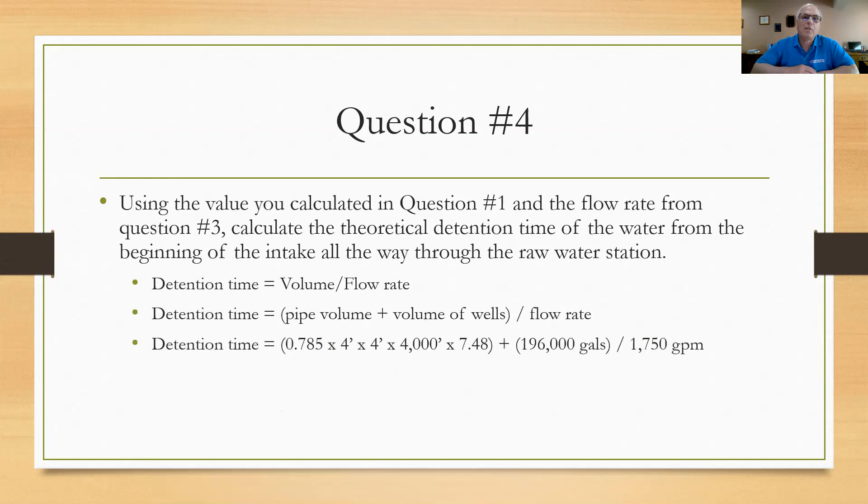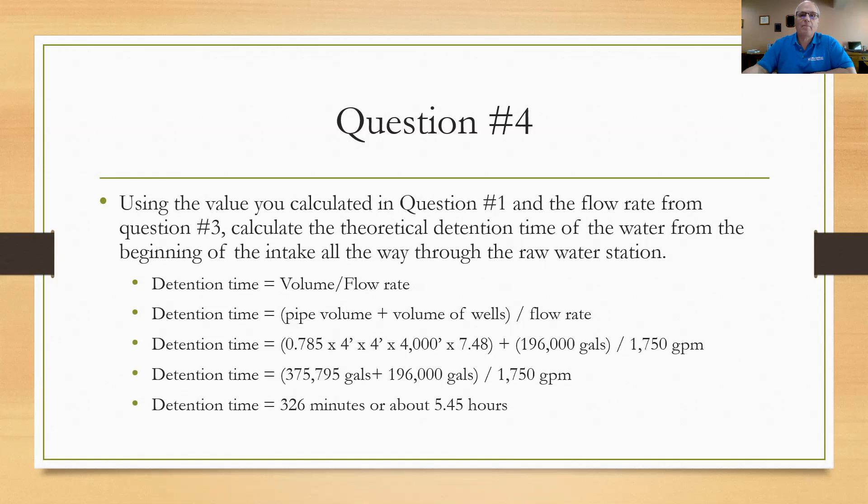So the detention time is going to become this: 0.785 times 4 times 4 times 4,000 feet. That's how long the intake is and I convert that to gallons by multiplying by 7.48. I'm going to take that value and add it to the volume of the wells that I already calculated which was 196,000. Add those two together and I can divide by the 1,750 gallon per minute rate. So the detention time becomes 375,795 gallons plus the 196,000 gallons divided by 1,750 gallons per minute or about 326 minutes which is roughly 5.45 hours. That's a long time. You can see that when the water moves that slow it creates a lot of detention time. Makes sense.